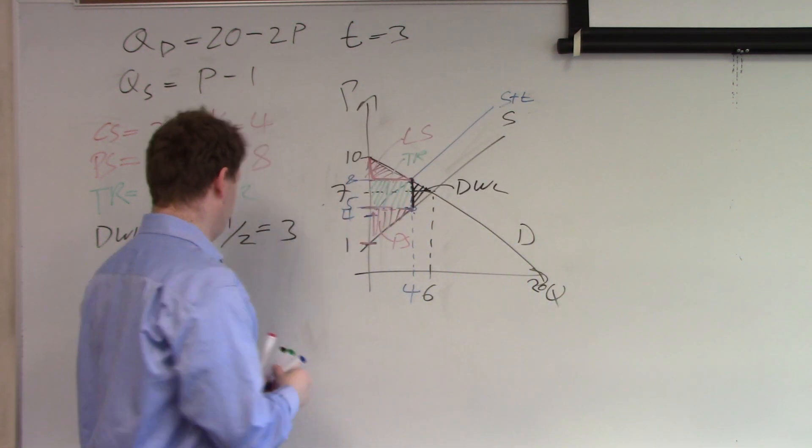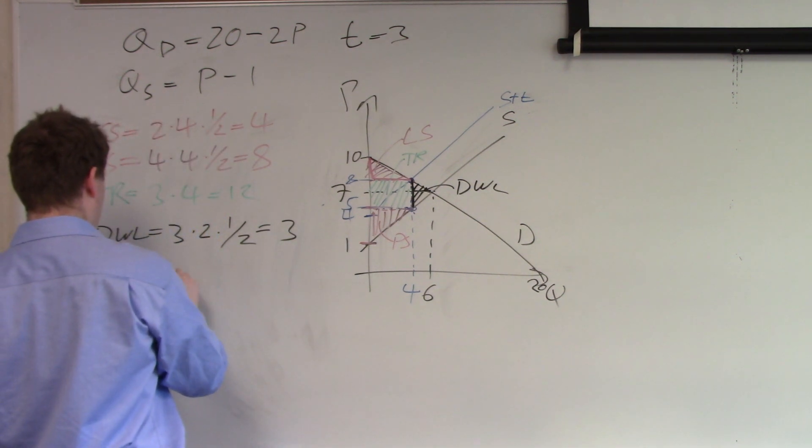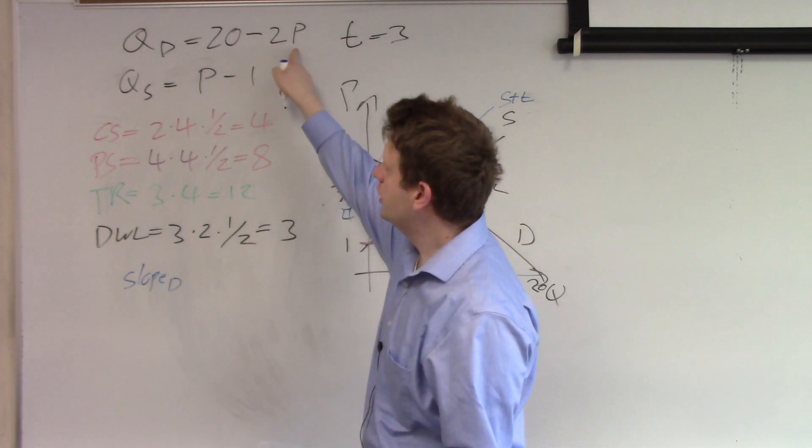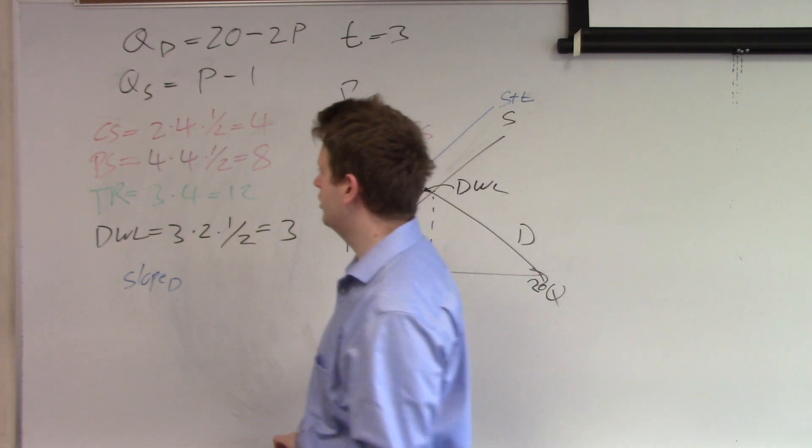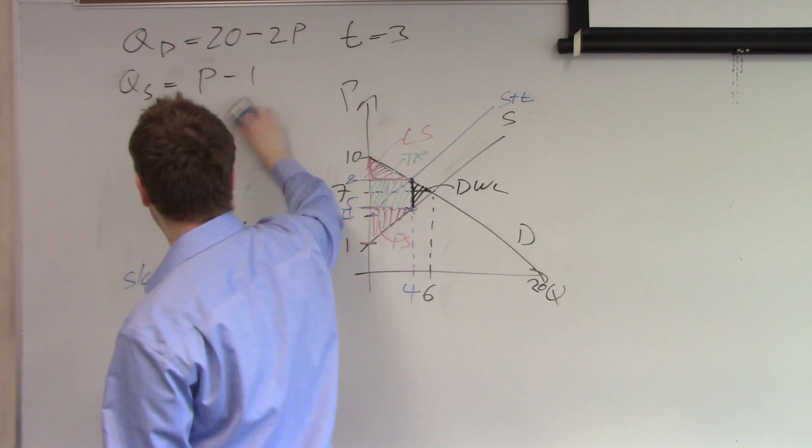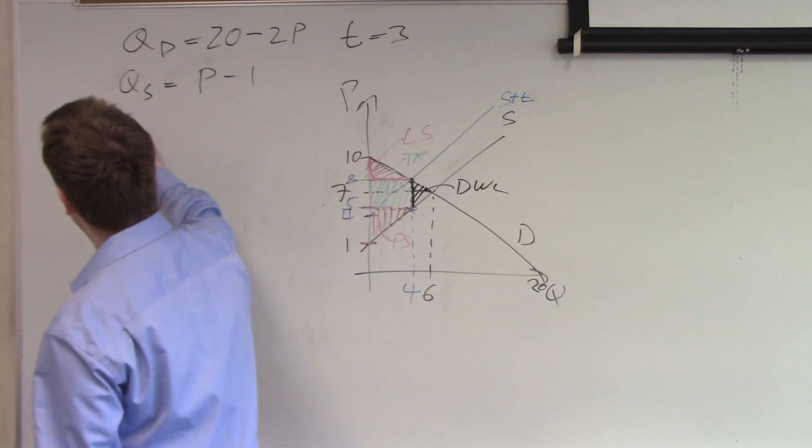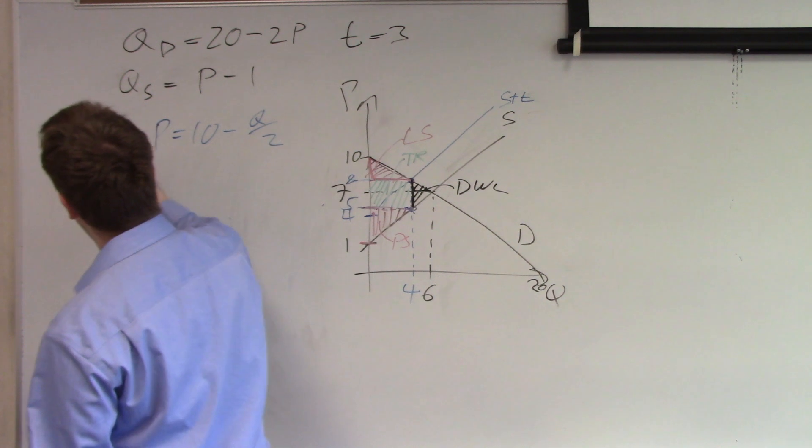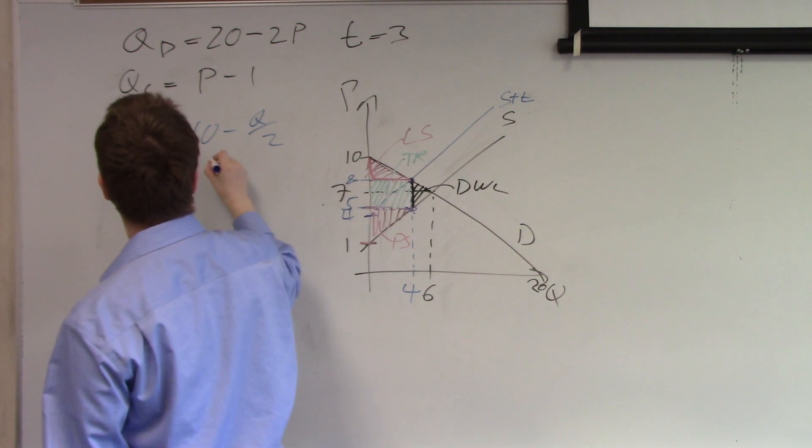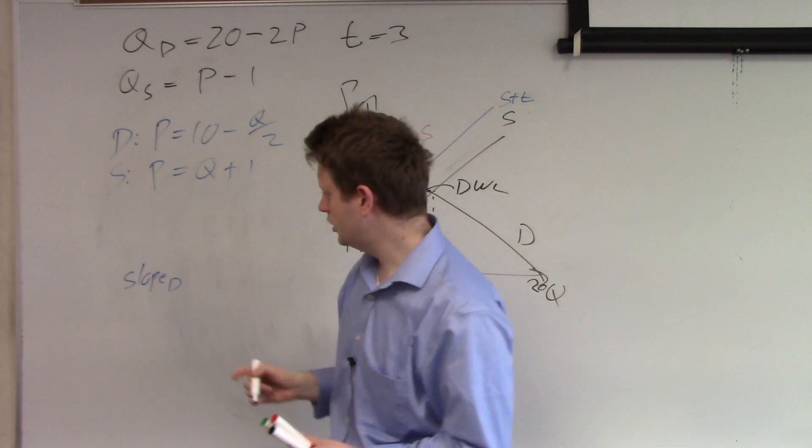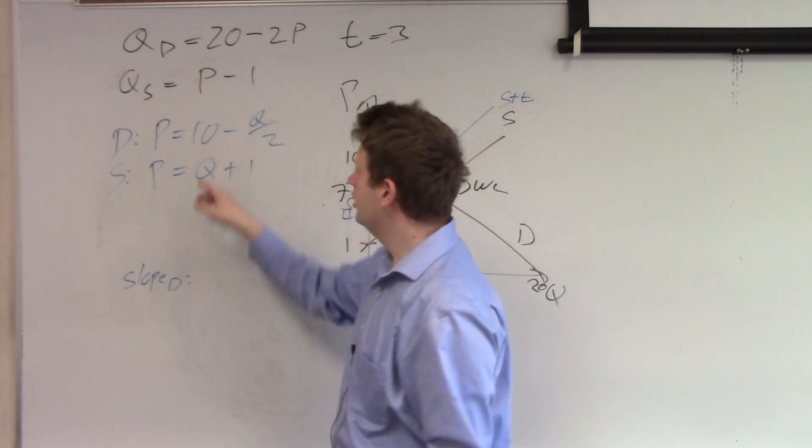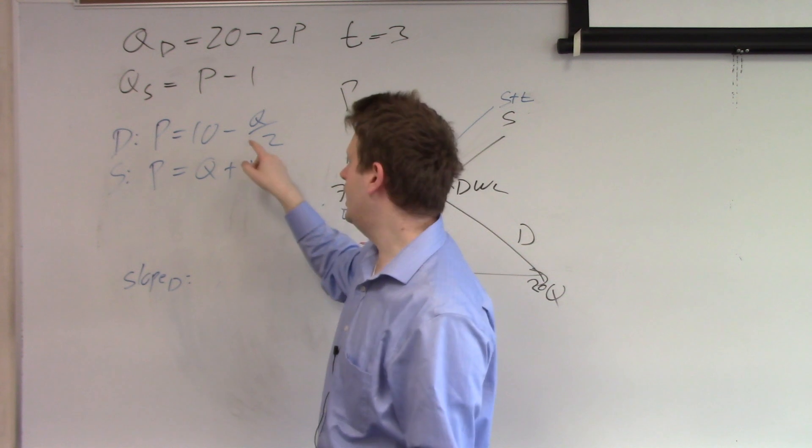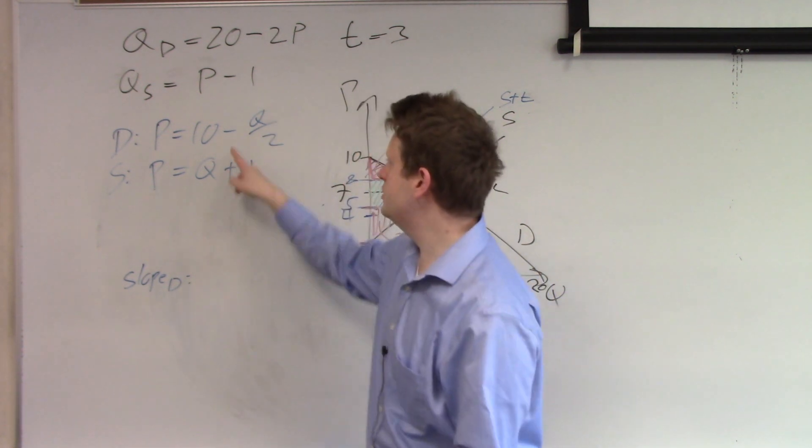So let's get the slope of demand. The slope of demand can be seen from these equations if we flip them. So let me quickly rewrite them. Demand, we have P equals 10 minus Q over 2. And supply, we have P equals Q plus 1. So the slope for demand, we look into this demand curve with P equal to something. And we look at what is Q multiplied by. Well, first we see it's minus Q.